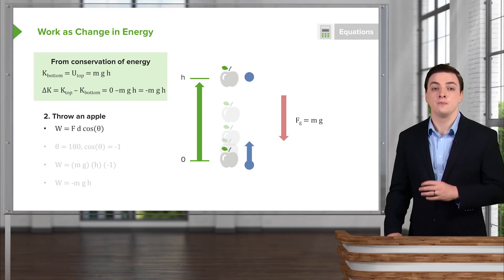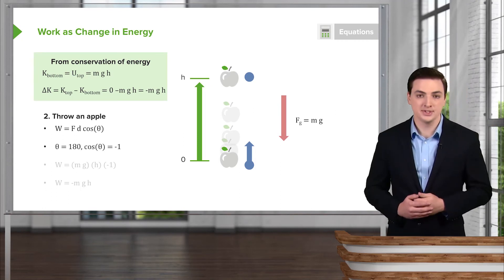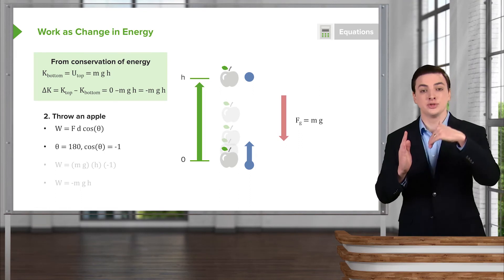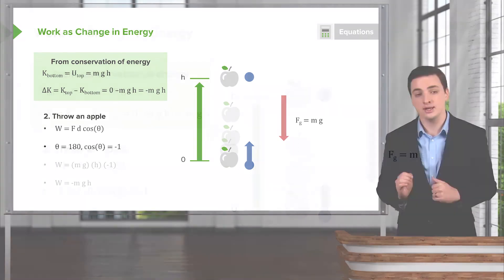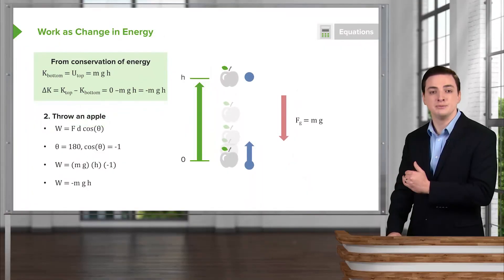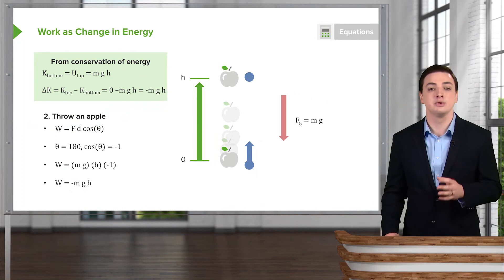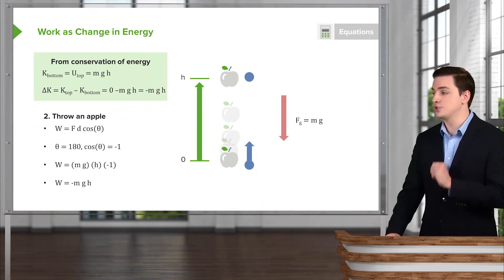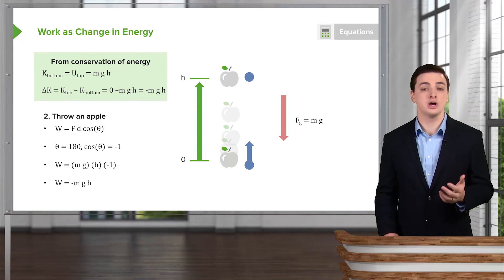Looking at this from the perspective of work, we use f times d times cosine of theta. In this case the object is moving upwards but the force of gravity is downwards, so the angle between them is 180 degrees. The cosine of 180 degrees is negative one instead of positive one, indicating the force is fighting against the object — it's not wanting it to go up. Plugging in negative one, the work equals negative mg times h, which is negative mgh. This matches exactly: from conservation of energy we have minus mgh, and from work we also have minus mgh.